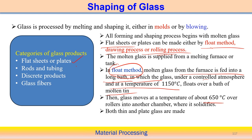There is another glass product where the shape can be rod and tubing. It is glass, but the shapes are different, so we can follow different kinds of processing techniques. It can produce discrete products as well as glass fibers. These are the four different types of geometric features in the categorization of glass products, each requiring different methods or techniques.